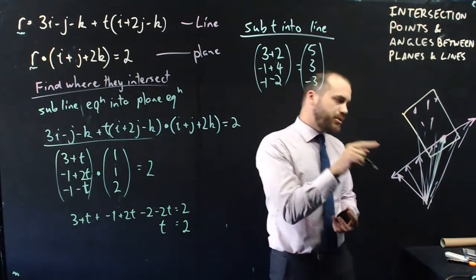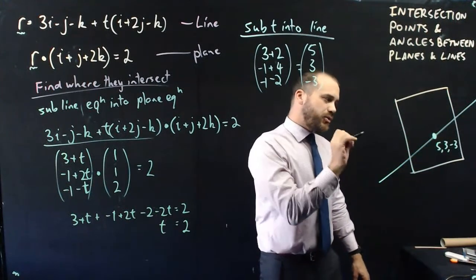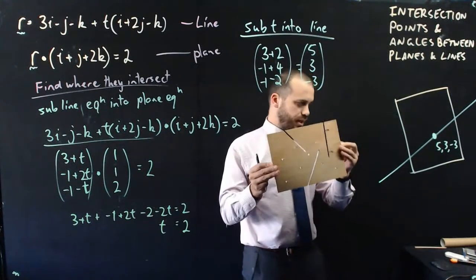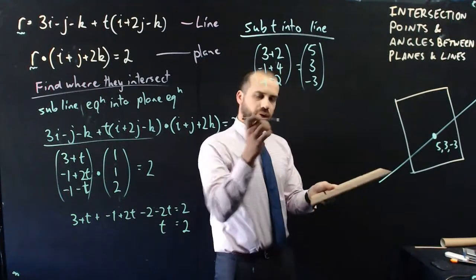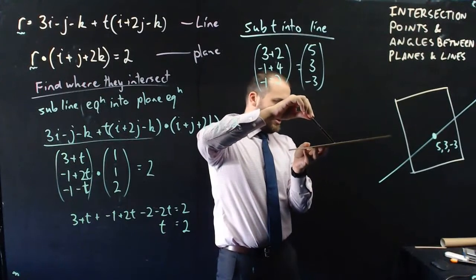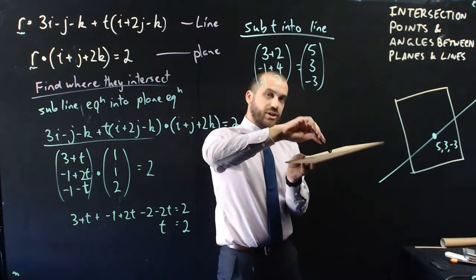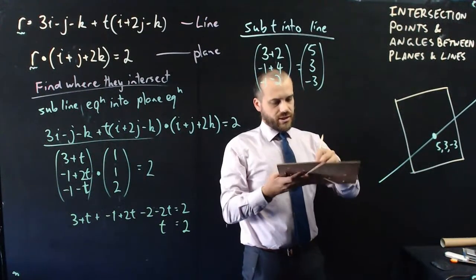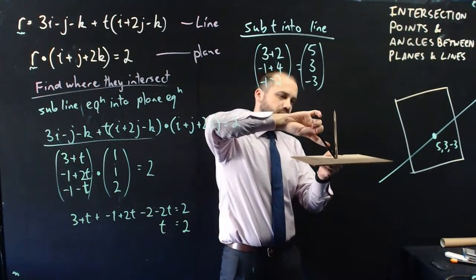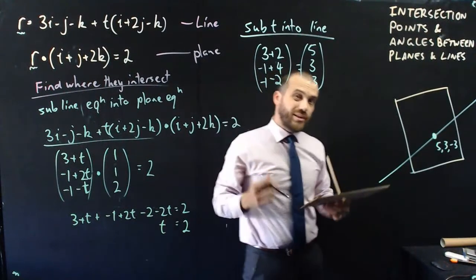Now, how are we going to find the angle between the line and the plane? Here's a piece of wood to make it concrete — the plane might look like this, the line on a weird sort of angle, and we want to know the angle between them. Finding the angle between the plane and the line directly is actually really hard. But what is really easy is finding the angle between the line and the normal to the plane. If I know that angle, I just subtract it from 90° to get the angle between the line and the plane.